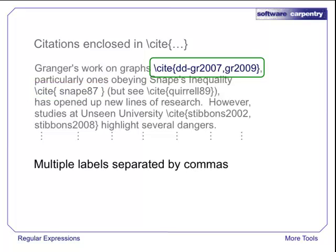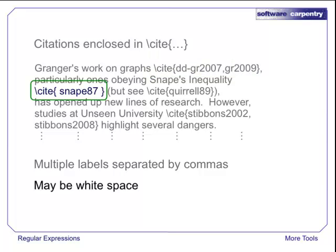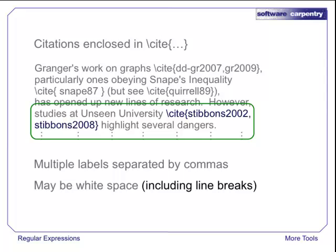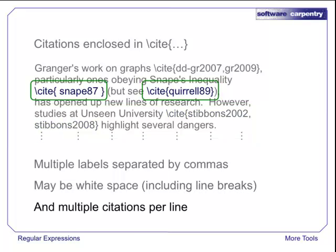A single citation can include two or more labels separated by commas. There may be white space before or after labels. There can even be line breaks where a citation is split across two lines. And there can be multiple citations per line.